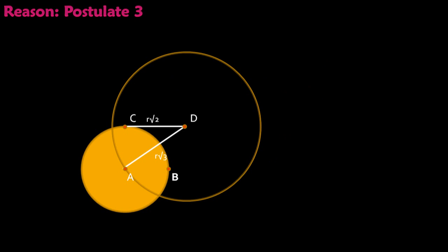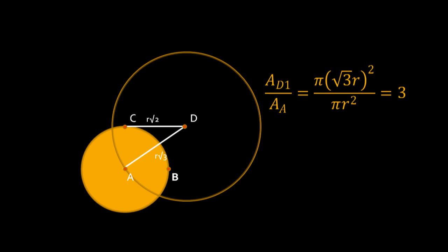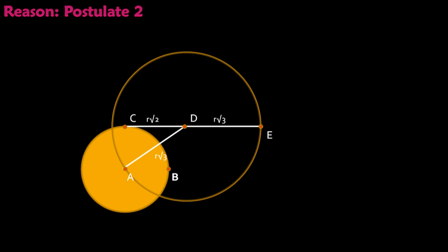Draw another circle centered at point D that passes through point A. The radius of this circle is the square root of 3 times R. The area of this circle is 3 times the area of the first circle. Extend the segment CD out until it intersects the third circle at point E, forming radius DE whose length is the square root of 3 times R.